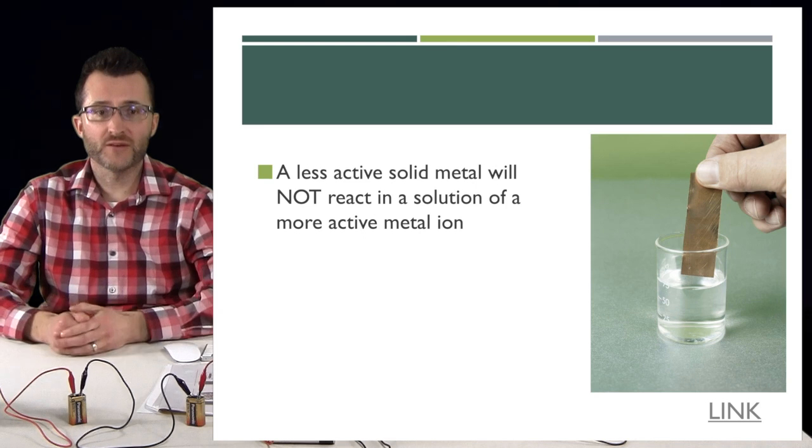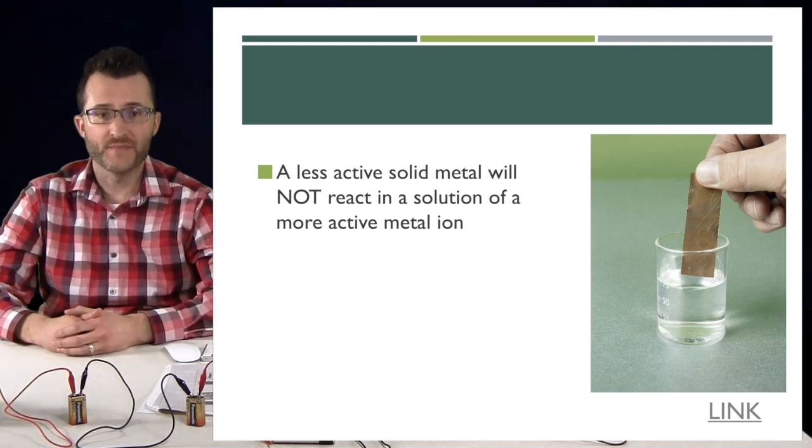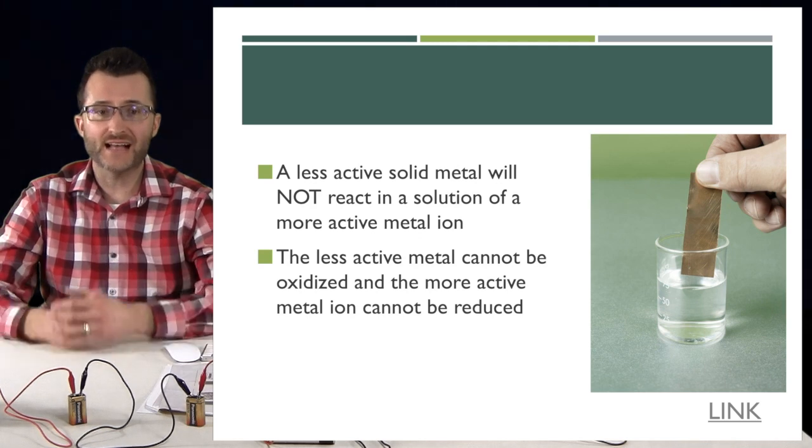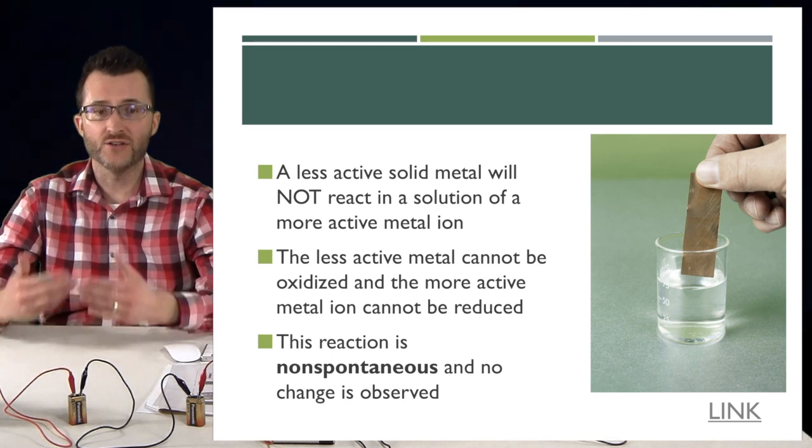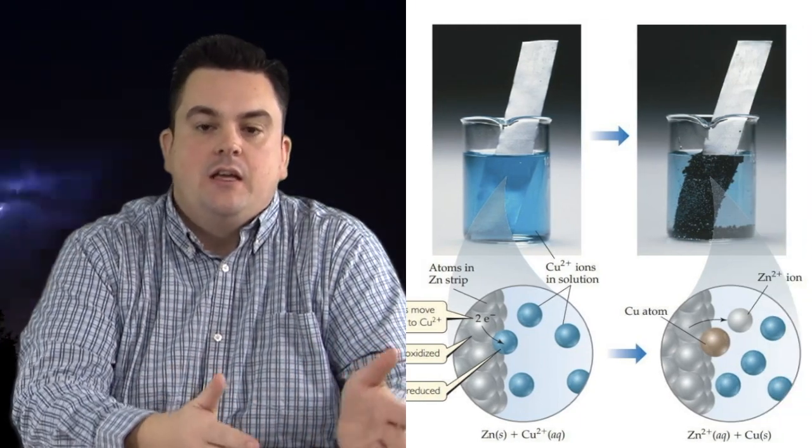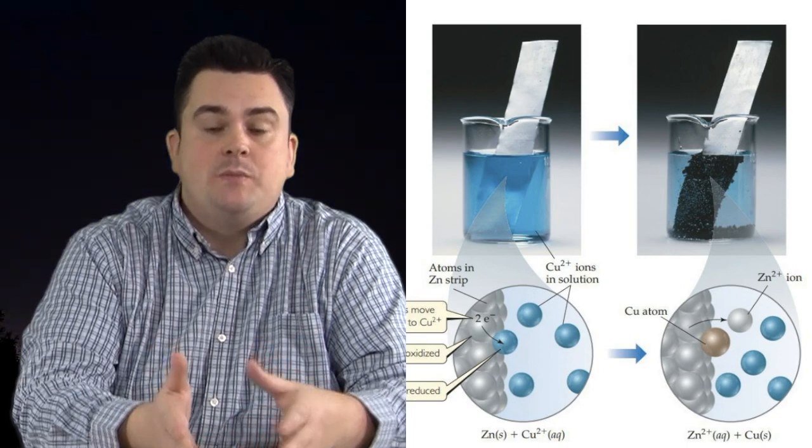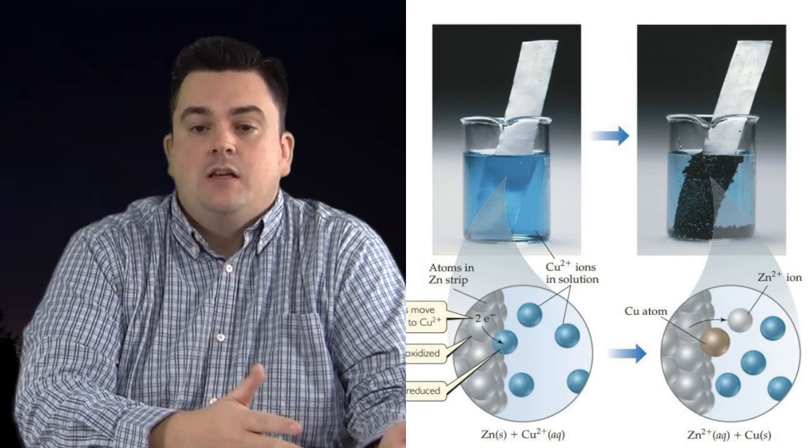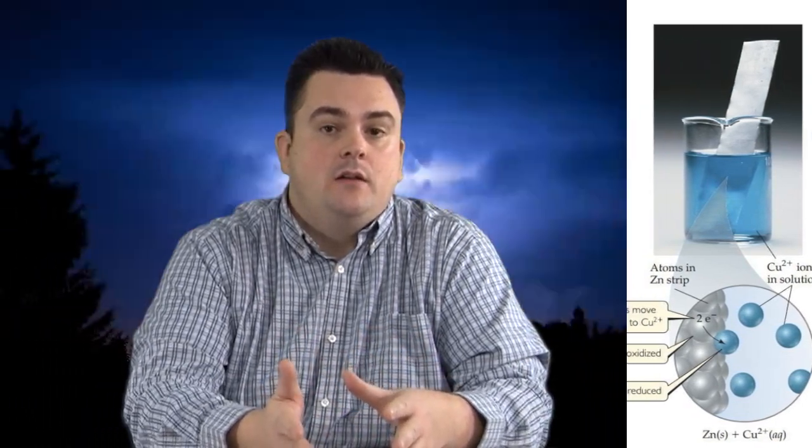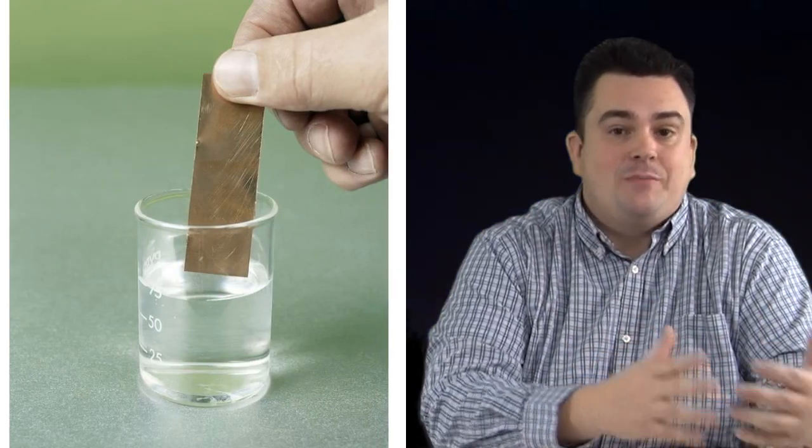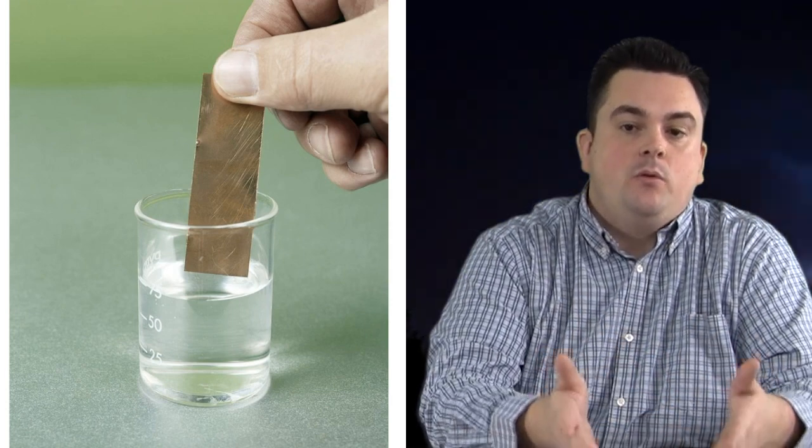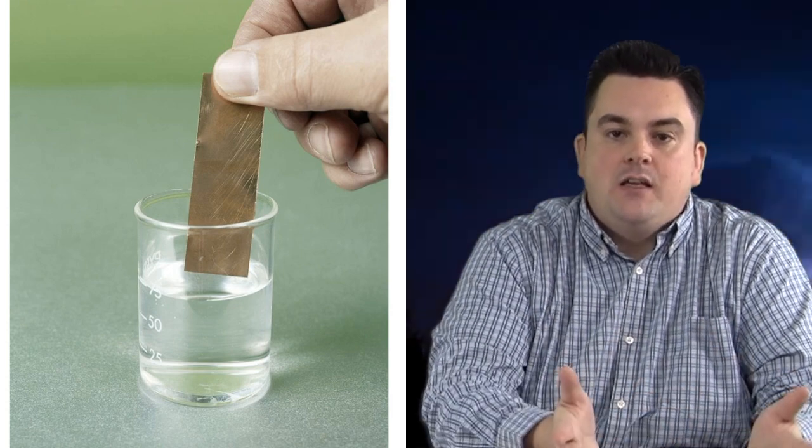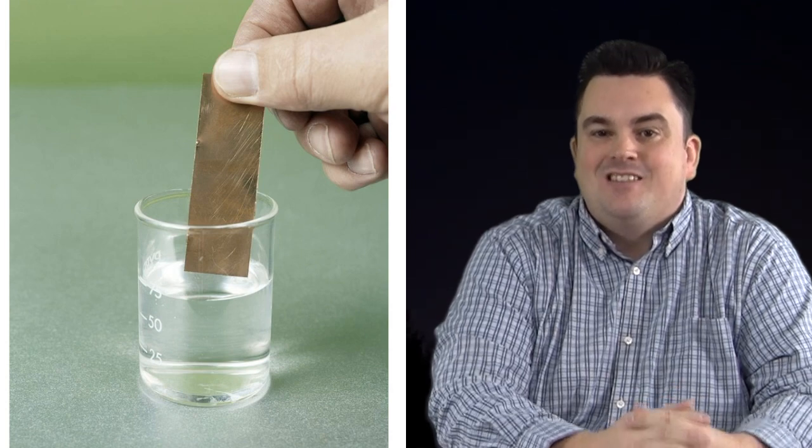A less active solid metal will not react in a solution of a more active metal ion. The less active metal cannot be oxidized and the more active metal ion cannot be reduced. This reaction is non-spontaneous and no change is observed. So we've been consistent using zinc and copper as examples this entire unit. And in the last slide, you saw how zinc metal will spontaneously react with copper plus two ions. In this case, we have reversed that. We have copper metal and we have zinc plus two ions. So if it's spontaneous in one direction, we would expect it to be non-spontaneous in the other. So in this example, we have copper metal placed in those zinc ions and nothing is happening. There's no reaction because copper is lower on table J.